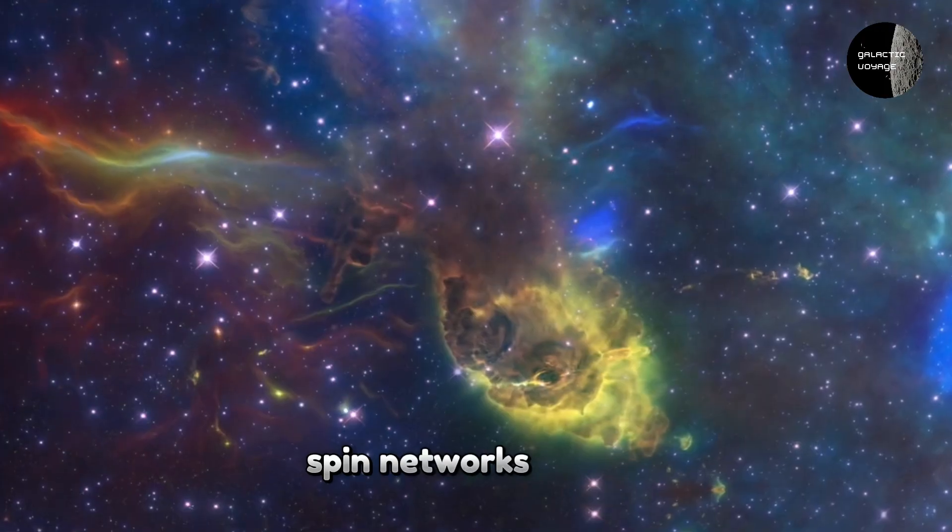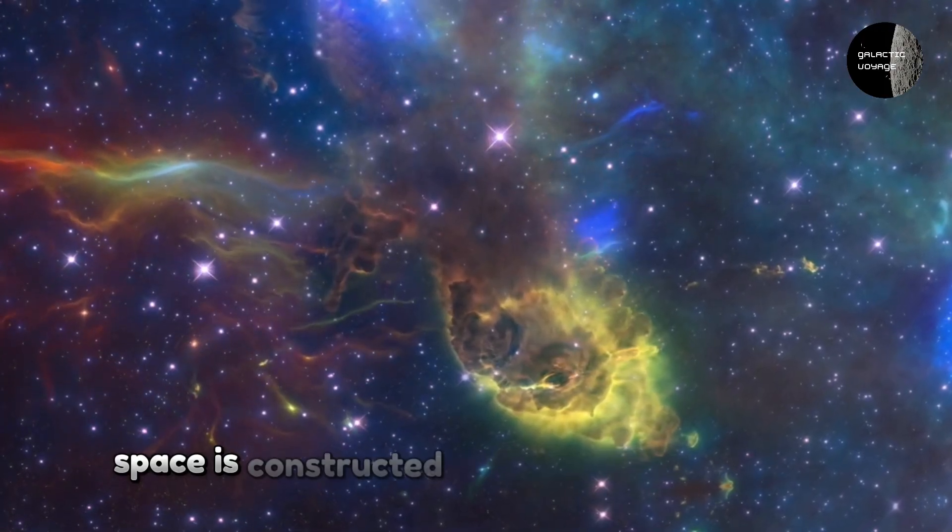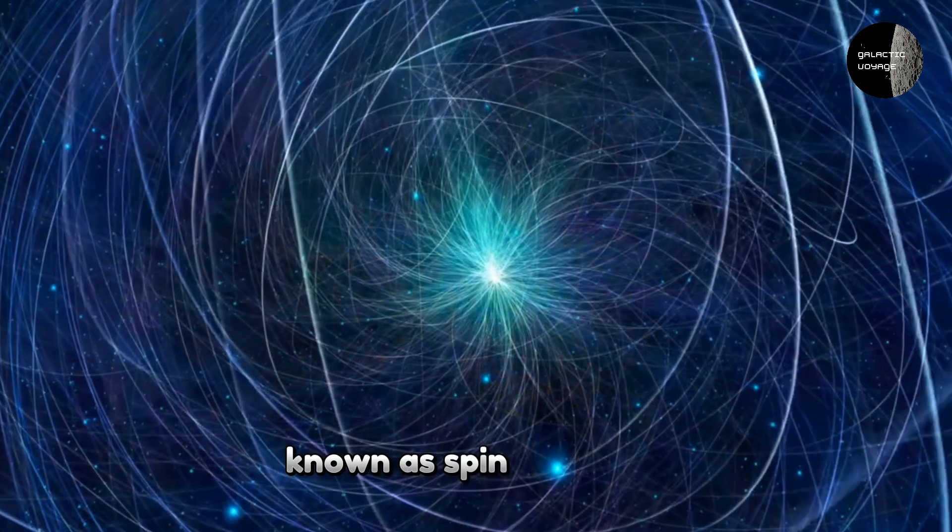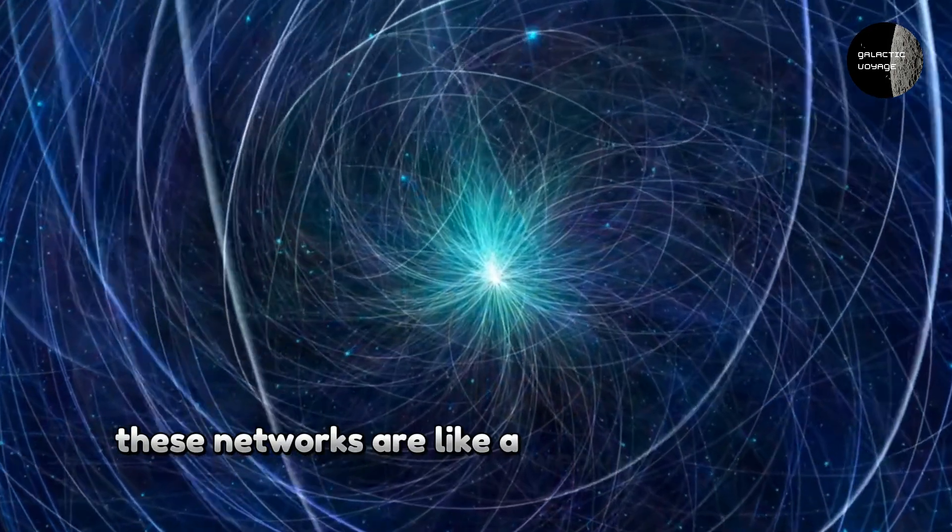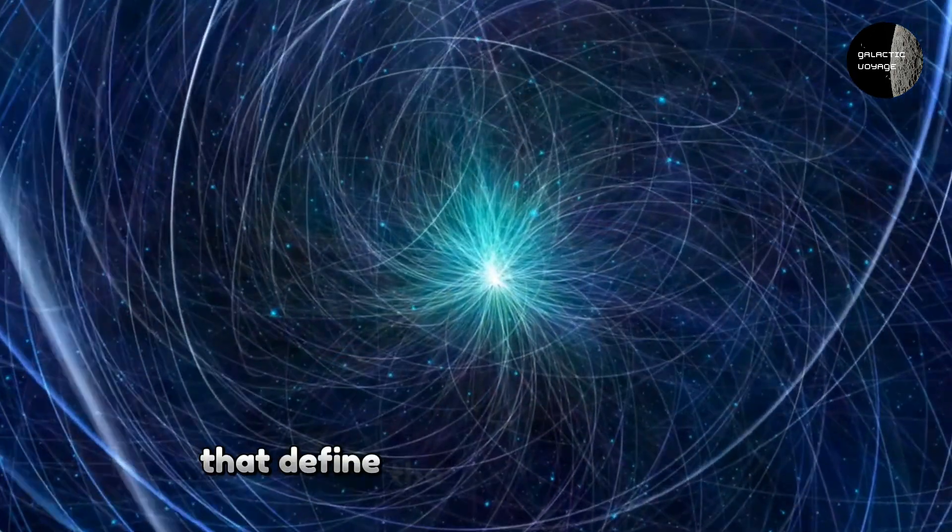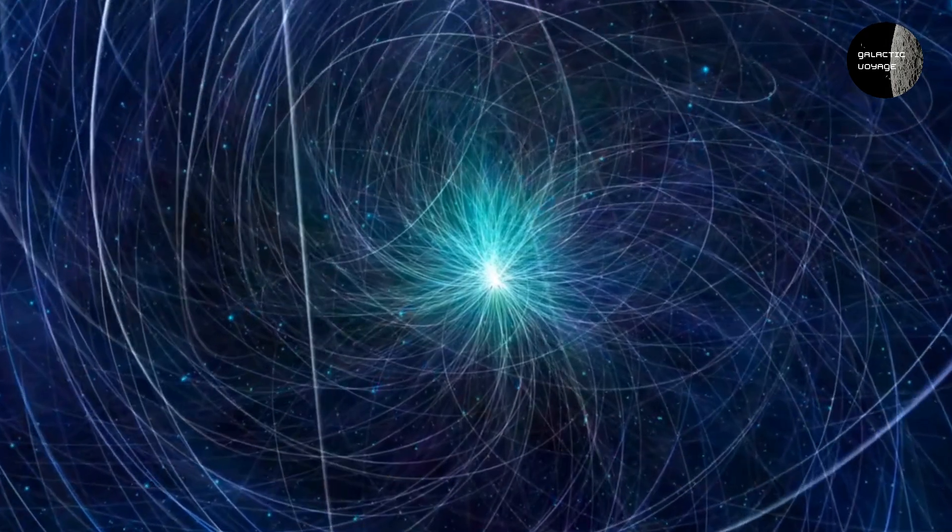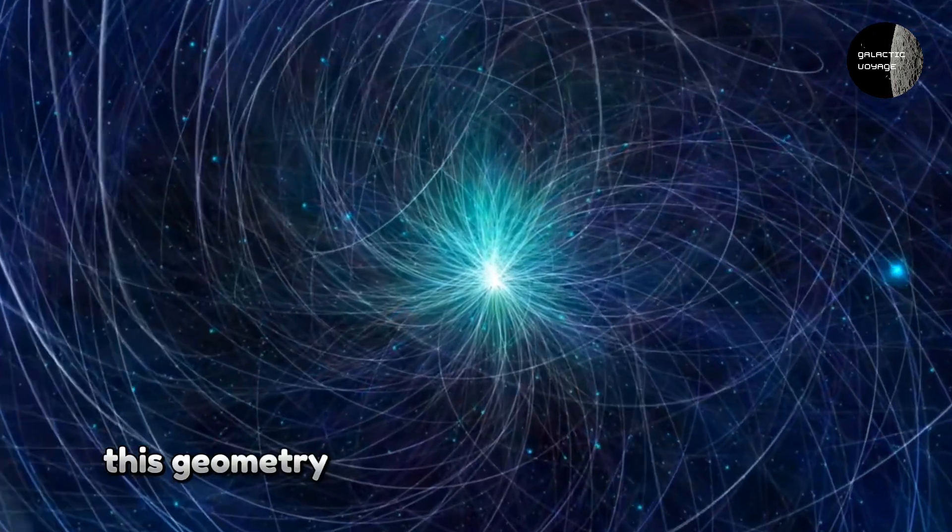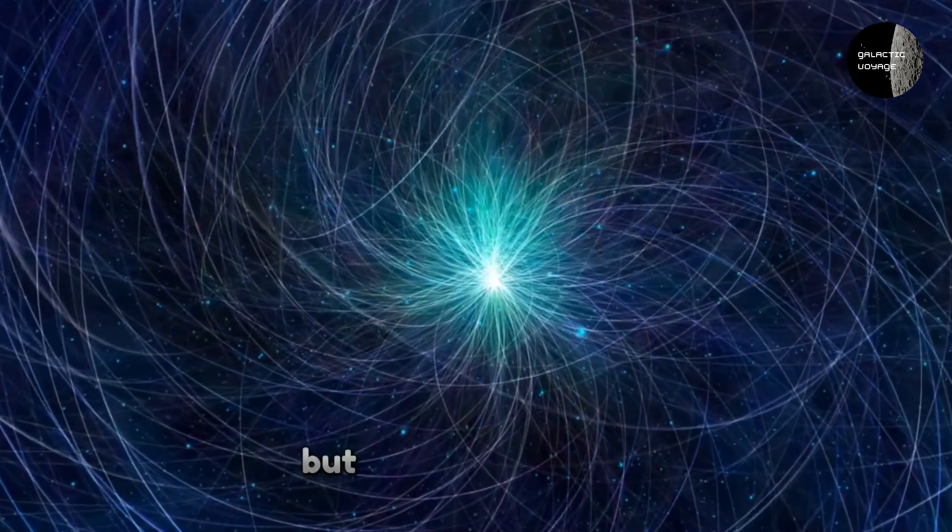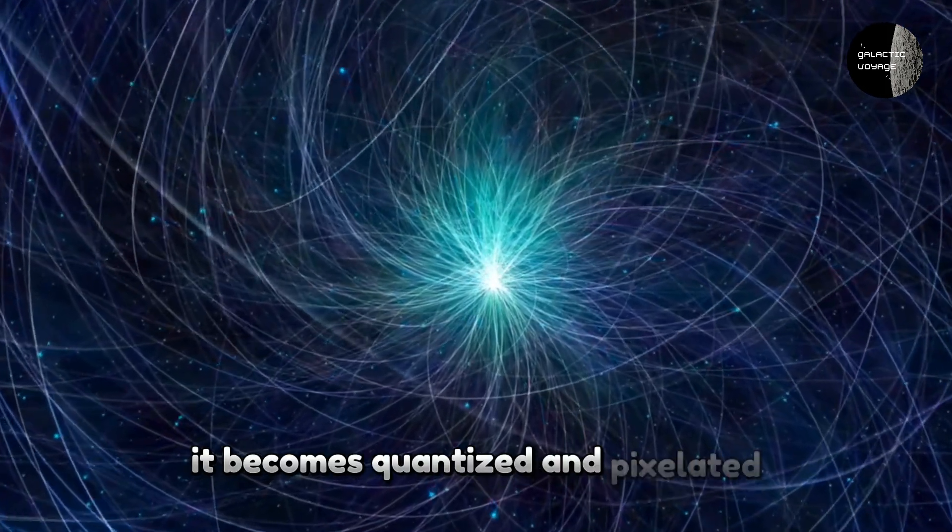Spin networks. In LQG, space is constructed from a network of loops known as spin networks. These networks are like a weave of quantum circuits that define the geometry of space. At large scales, this geometry appears smooth and continuous, but at the Planck scale, it becomes quantized and pixelated.